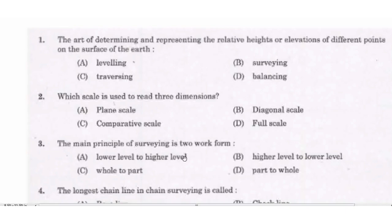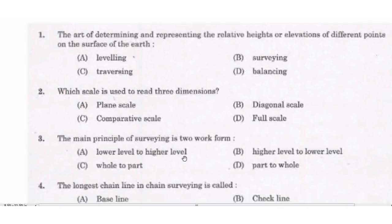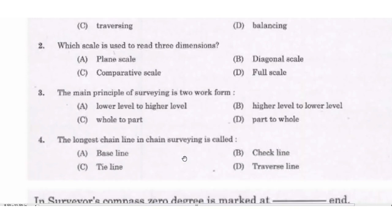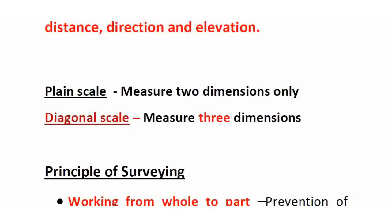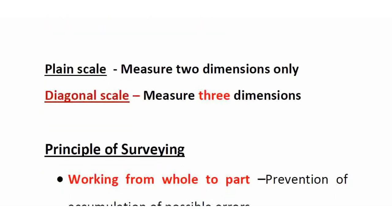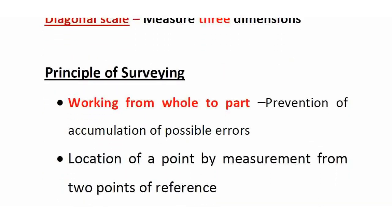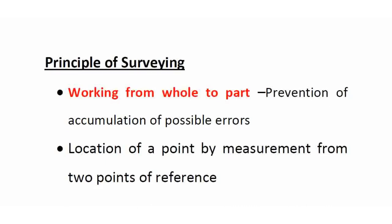The main principle of surveying is to work from Whole to Part — right answer Option C. In the whole area, we have control points first, then we divide into small triangles and reduce small areas. Working from Whole to Part reduces error.